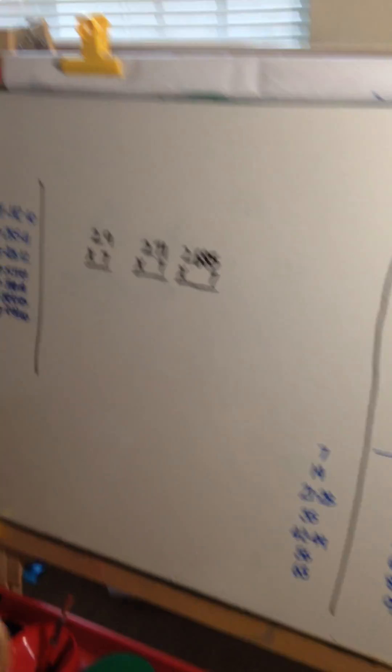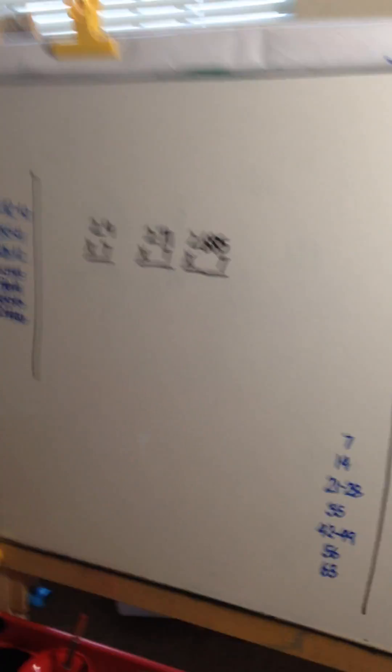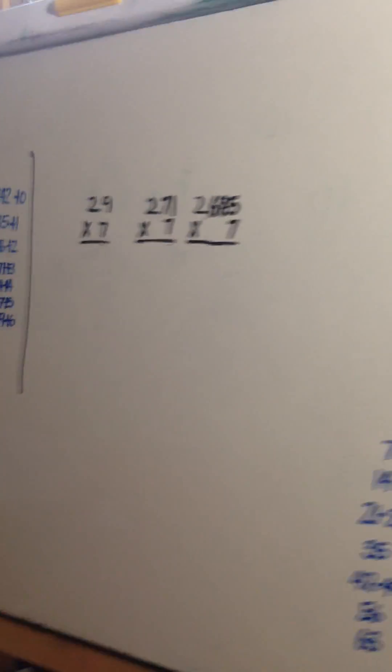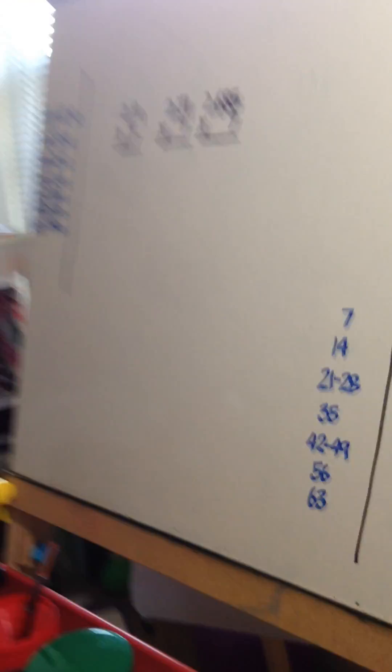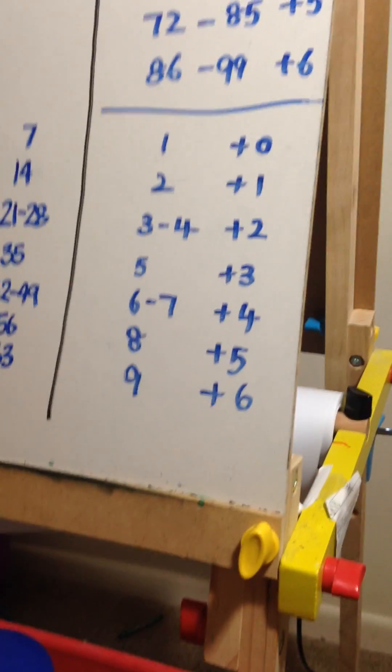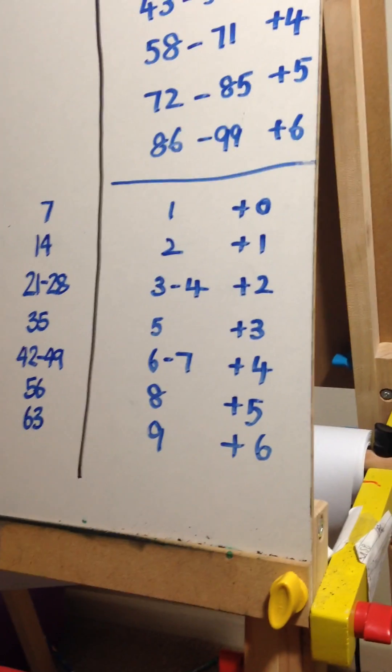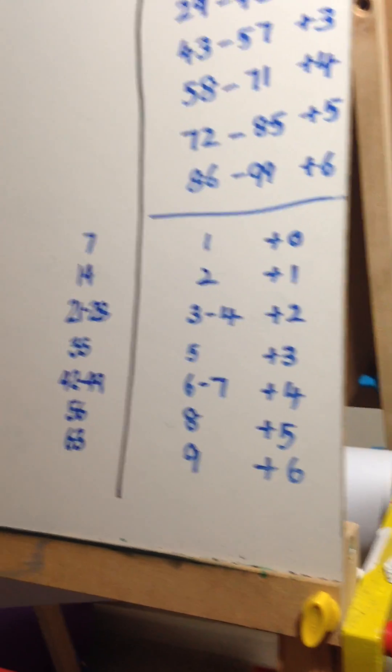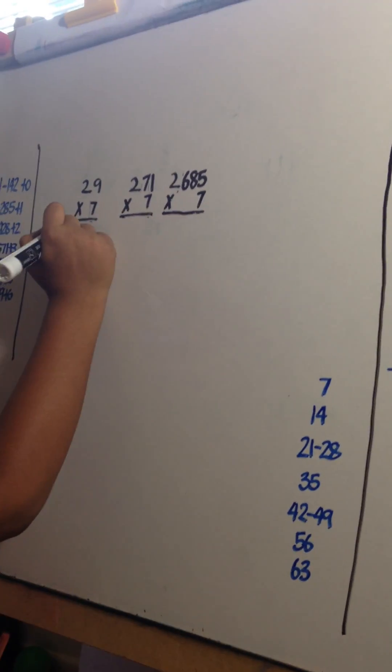29 times 7. 2 times 7 is 14. Don't write that yet because we want to know what 9 fits. According to the one-digit formula, 9 fits plus 6. So you add plus 6 to 14. The answer is 20. Put that in the beginning.